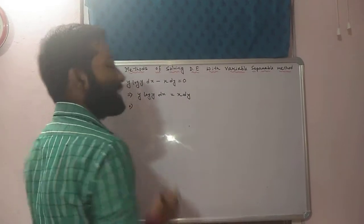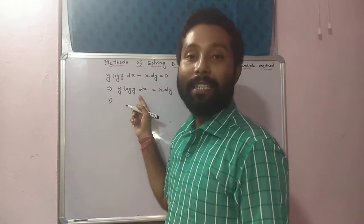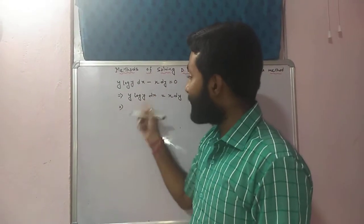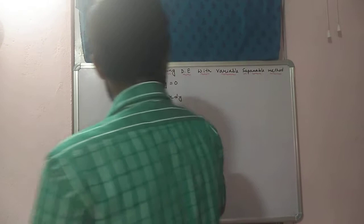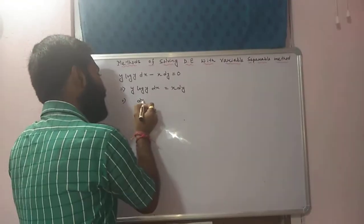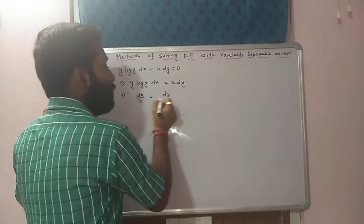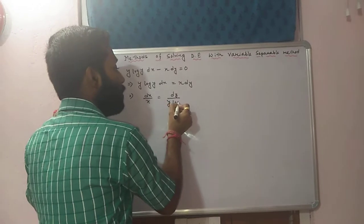Now after shifting the second term to the right hand side, check which variable is on the left hand side. dx है, तो मतलब सब x का term left hand side में लाना है और y का term को right hand side में लेके जाना है. So dx divided by x on the left, which equals dy by y into log y.